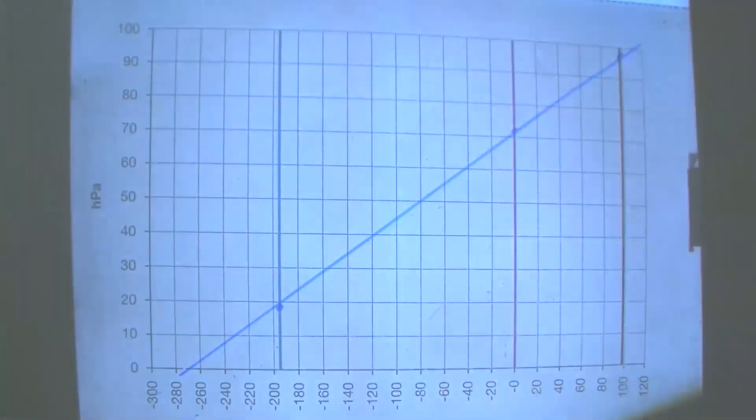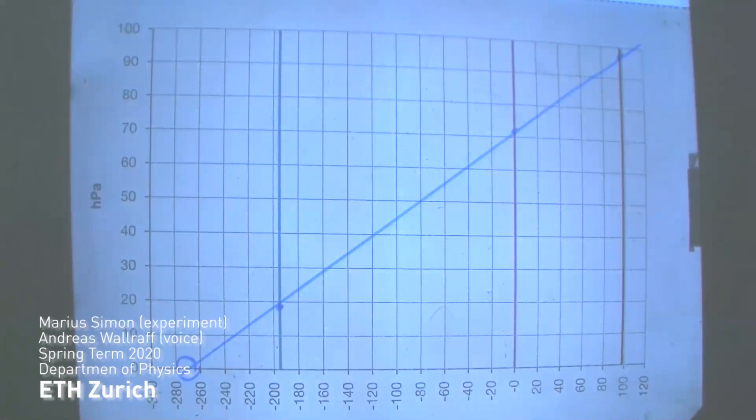And what we find is that as the pressure approaches zero, we'll reach a zero in temperature. And that zero in temperature can be read off on this chart. And so this is one of the ways using a gas thermometer to get an idea about the absolute zero of temperature.